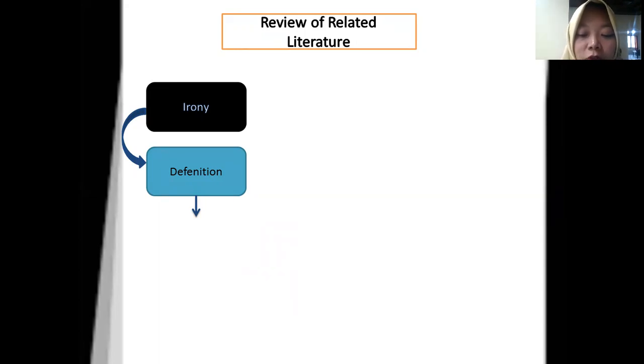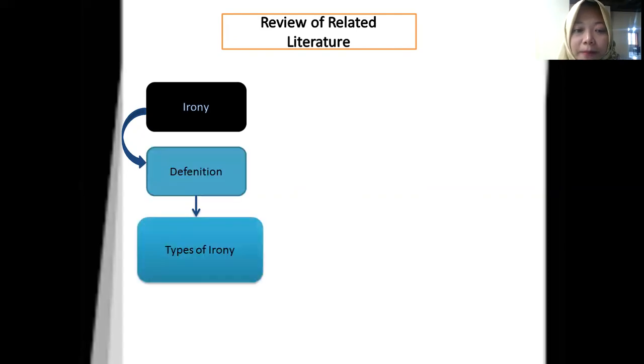According to Abrams, irony is the underlying sense of making inconsistencies or deceptions between what is revealed and what the case really is. So it can be concluded that irony itself is a kind of figurative language which consists of the contrast between the expectations and the reality that happens in the story. There are many kinds of irony.